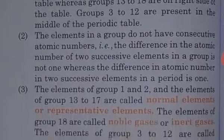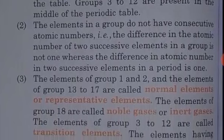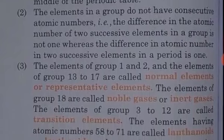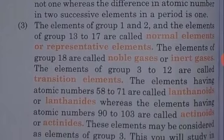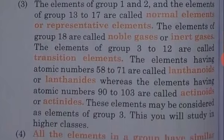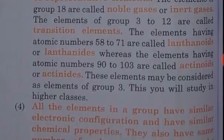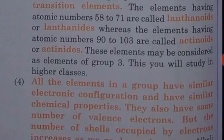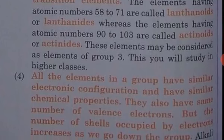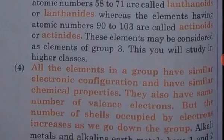The vertical columns are called groups, and there are 18 vertical columns. Groups 1 and 2 are on the left side. The elements of Groups 1, 2 and Groups 13 to 17 are called normal elements. The elements of Group 18 are called the noble gases or inert gases. The elements of Groups 3 to 12 are called the transition elements.